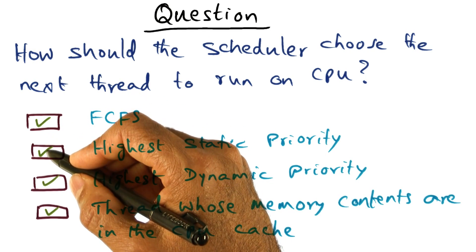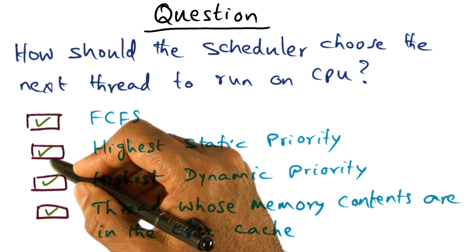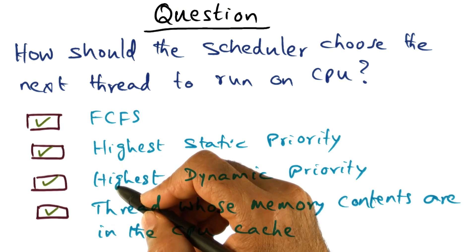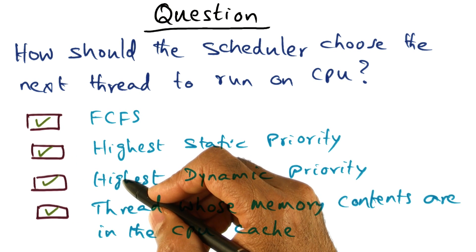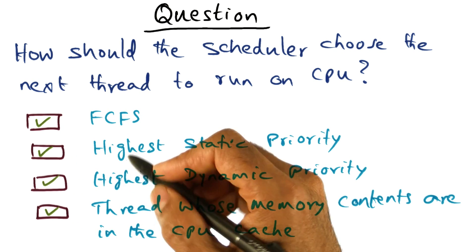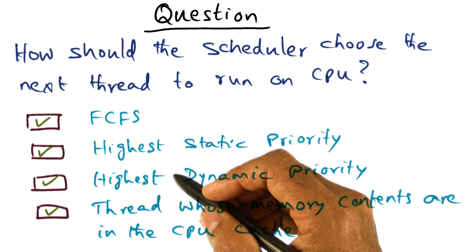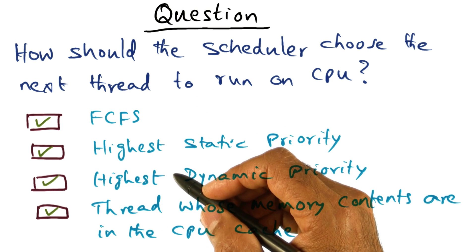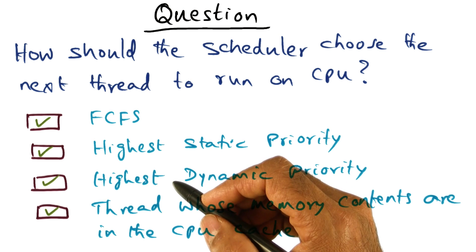If you picked any or more or all of the choices that I gave you, you are not completely off base. Let me just talk through each of these choices and why it may be a perfectly valid choice for the scheduler in picking the next thread to run on the processor.